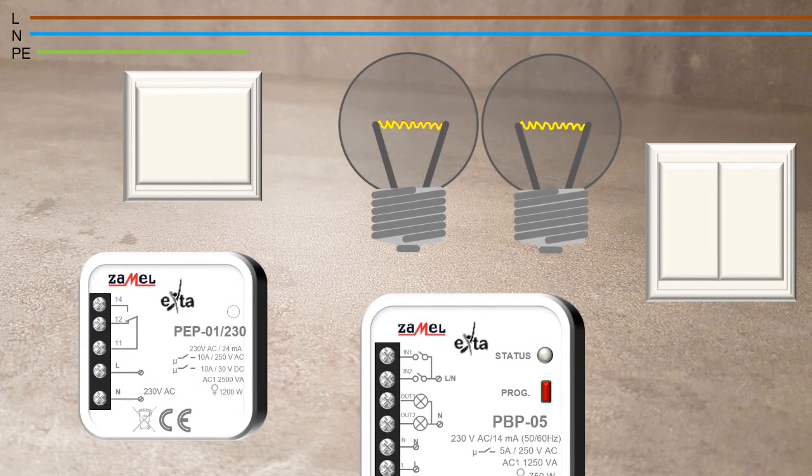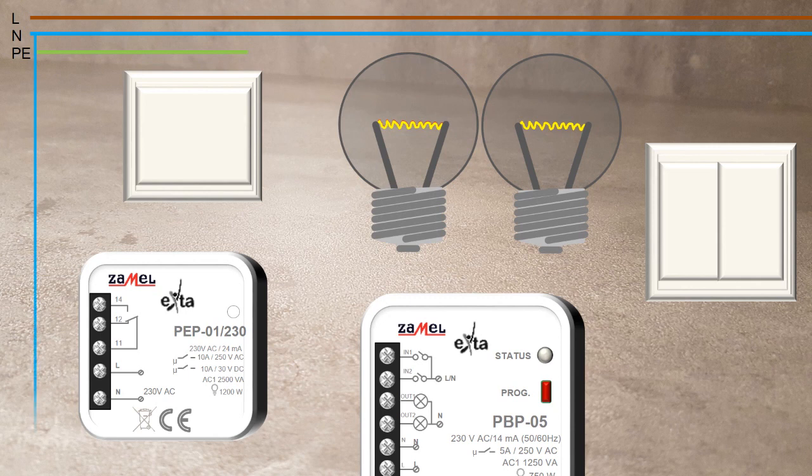Provide power supply to the PBP05 bistable relay. The neutral wire from the switchgear connect to the end terminal of the PBP05 controller. The neutral wire connect the end terminal of the PEP01 electromagnetic relay.